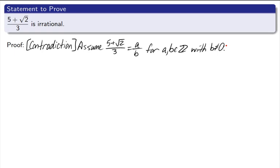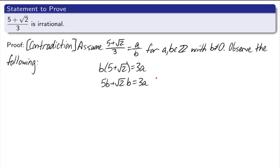Now let's try to manipulate this a little bit. Observe the following. The first thing that I'll do is cross multiply this expression. Now let's distribute the b. 5b plus square root of 2 times b is equal to 3a. Continuing onward, let's subtract 5b. And then finally, let's divide by b to get square root of 2 by itself. Square root of 2 equals 3a minus 5b over b.